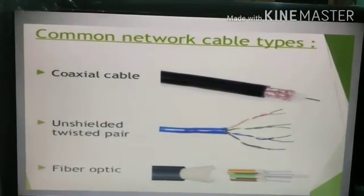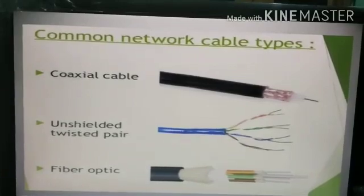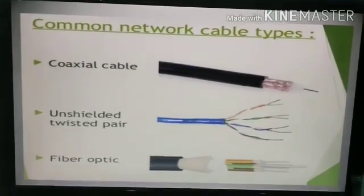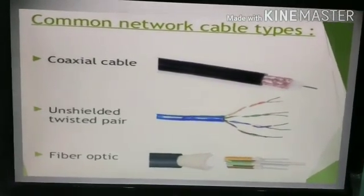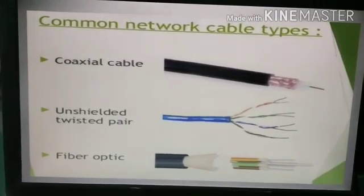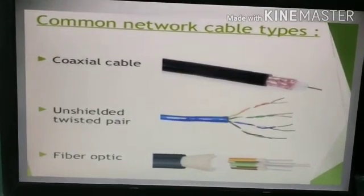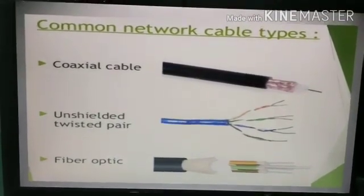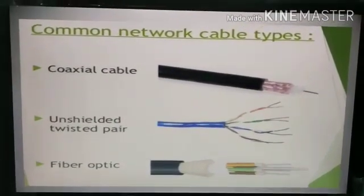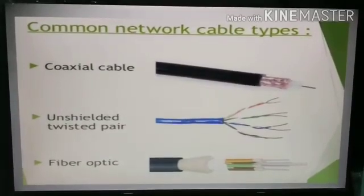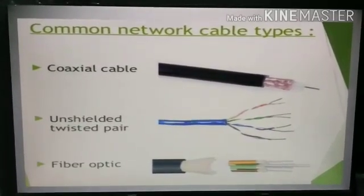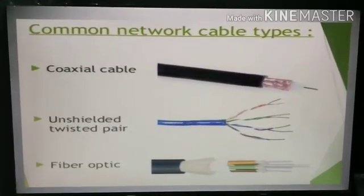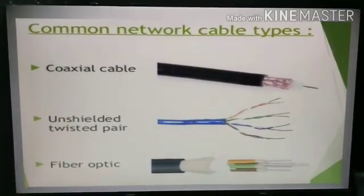First is twisted pair cable. This cable is the most commonly used and is cheaper than other cables. It is lightweight, cheap, can be installed easily, and supports many different types of network. It has a pair of twisted conductors.